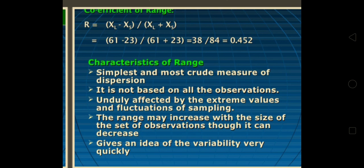Its characteristics: it is the simplest and most crude, it is not based on all observations - only counting highest and lowest, unduly affected by extreme values and fluctuations of sampling. The range may increase with the size of the set of observations, though it can decrease. It gives an idea of variability very quickly.